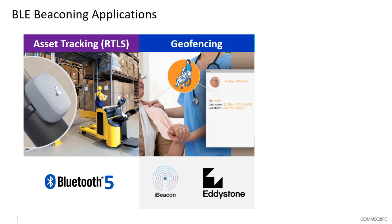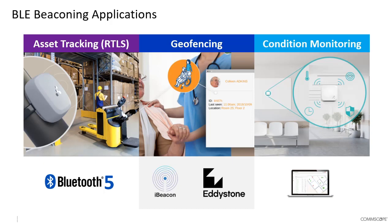Another application using a similar approach is geofencing. When we want to detect if something leaves a building or a specific location, we can use a tag attached to a person or asset and detect when that device transitions past a threshold or specific location. Alternatively, if the device disappears from the network, we can review historical data, determine when and where it left, and trigger an alarm or notification for that geofence event.